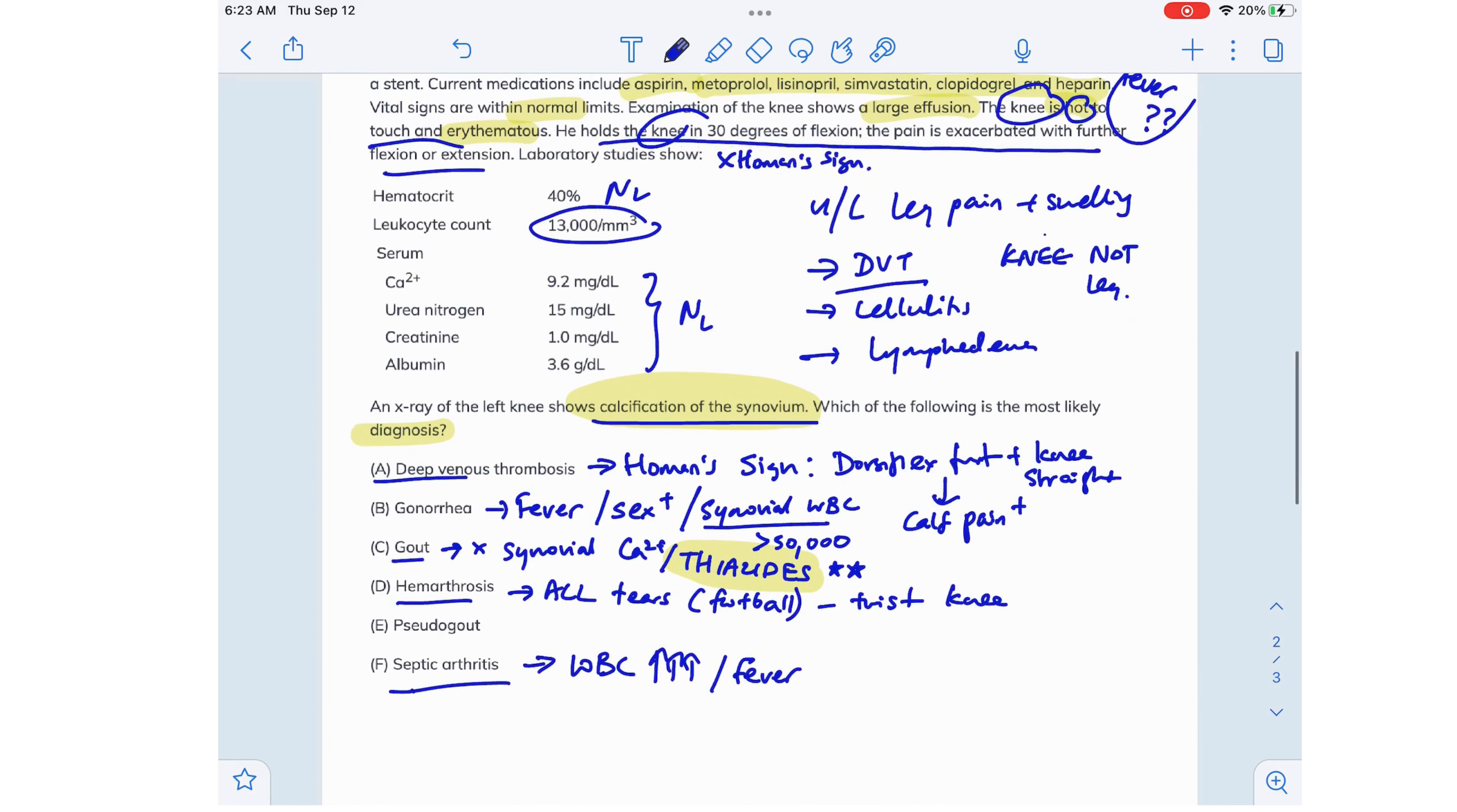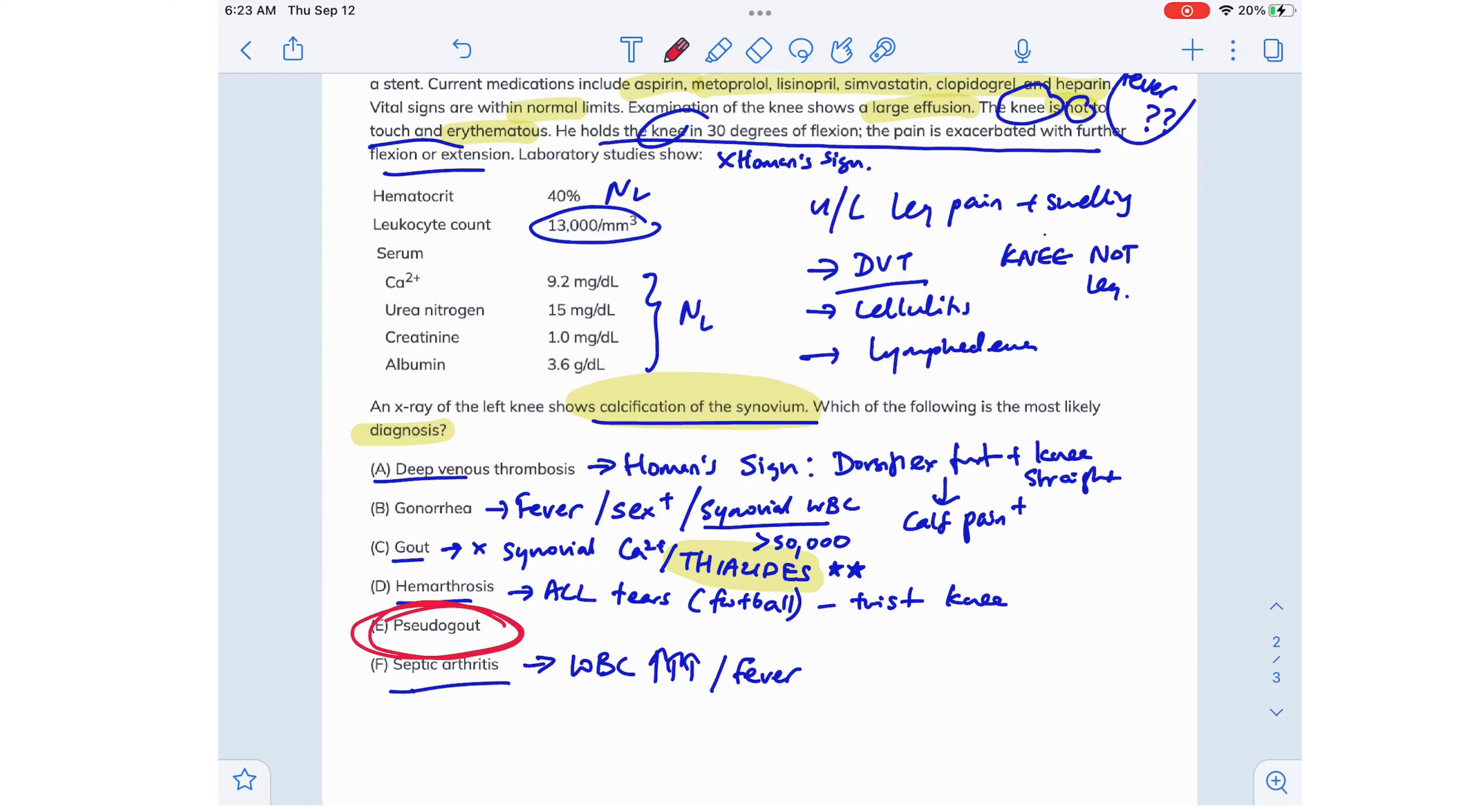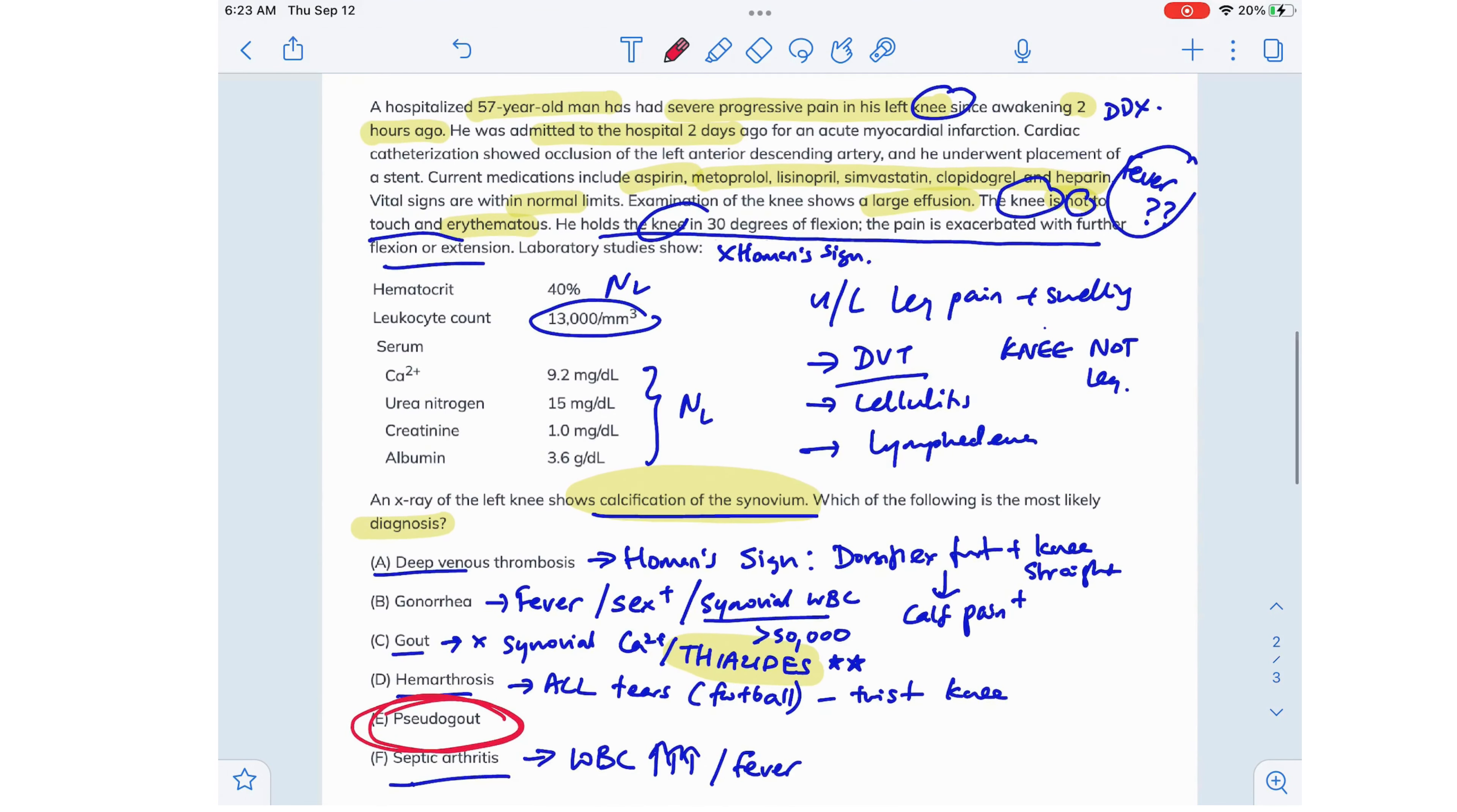And this leaves us with pseudogout, which is the correct answer to this question. A characteristic feature of pseudogout that helps you differentiate it from gout is that the X-ray of the knee would show calcification of the synovium. That is a characteristic feature found on the X-rays in patients with pseudogout that easily helps you differentiate it from gout, because they both present similarly. They both present with a tender red knee joint. So the correct answer here is pseudogout.